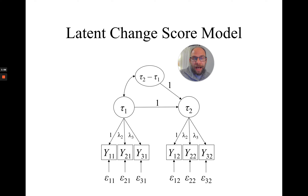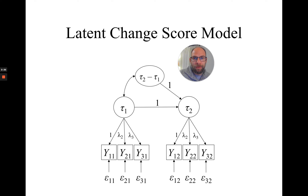In my first video on the latent change score model, I presented this parameterization that you can see here on this picture, where the latent difference score factor tau 2 minus tau 1 is introduced in the structural model by this equation that says that tau 2, the latent variable at time 2, is a function of the latent variable at time 1, tau 1, plus the difference tau 2 minus tau 1. This tautological equation allows us to include this additional latent variable, tau 2 minus tau 1, in our structural model, which reflects the latent change over time, or true change — change in the true scores across time.